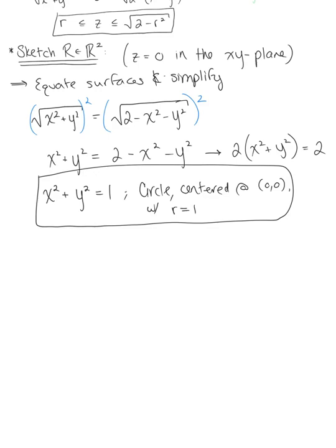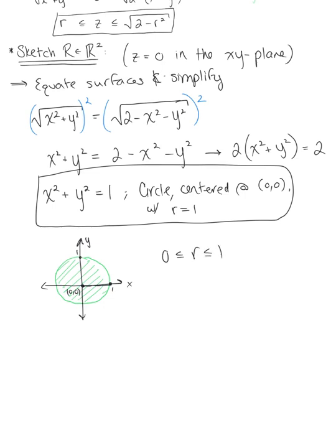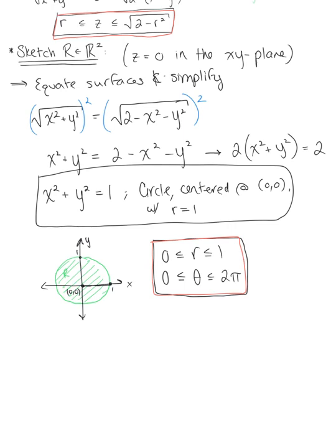That's our two-dimensional region of integration. Sketching this circular region in two dimensions with axes y and x, we have radius 1 centered at the origin. So the bounds on r are 0 ≤ r ≤ 1. Since we have a complete circle, θ ranges from 0 to 2π. We now have everything needed: z-bounds from three dimensions and r and θ bounds from the two-dimensional projection.